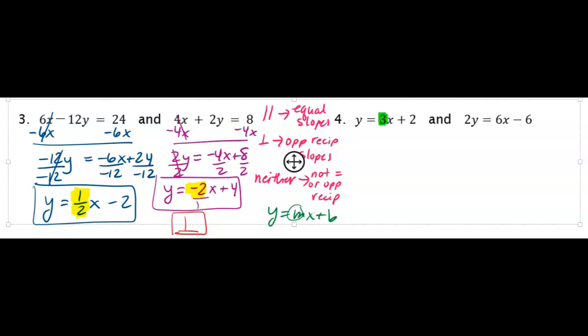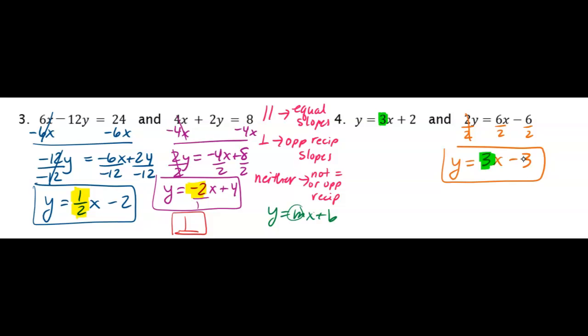And this one is actually halfway done for us. All we have to do is get rid of this 2. So I'm going to divide everything by 2 and I have y equals 3x minus 3. Now if you look at the number next to the x, it's 3, which matches exactly with the 3 from the first equation. So since these two things are equal, that means that these two lines are parallel.